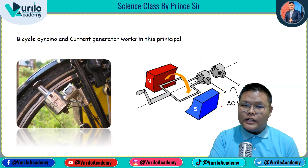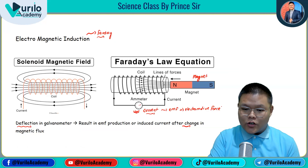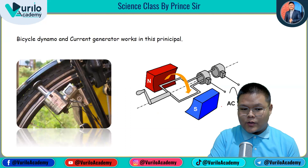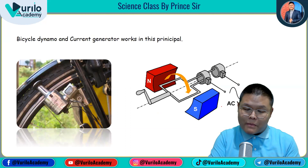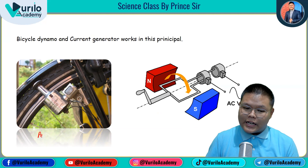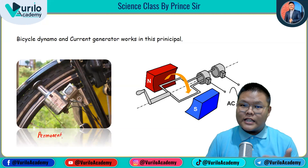The two main applications based on electromagnetic induction are used in everyday electrical appliances. One example is the bicycle dynamo. The dynamo contains a permanent magnet. When you rotate it, electromagnetic induction takes place due to the permanent magnet, and electricity is produced. This is how a dynamo or current generator produces electrical energy.